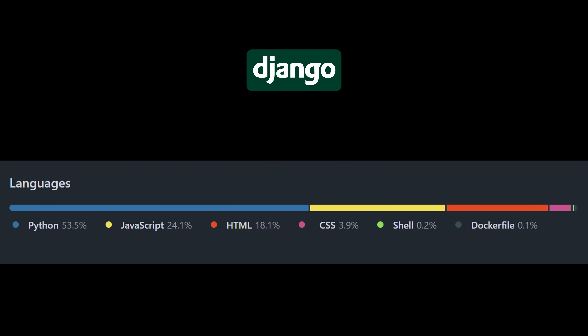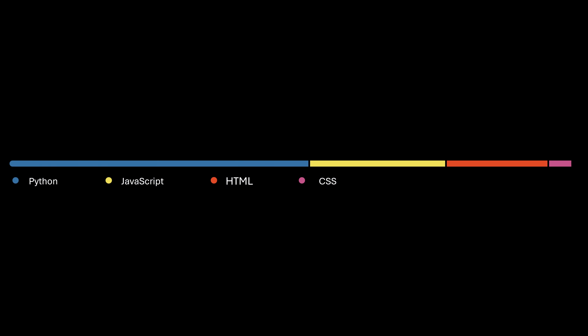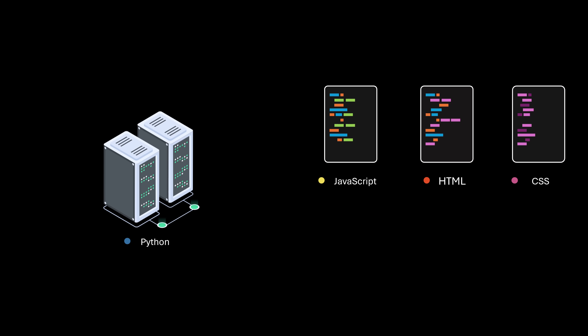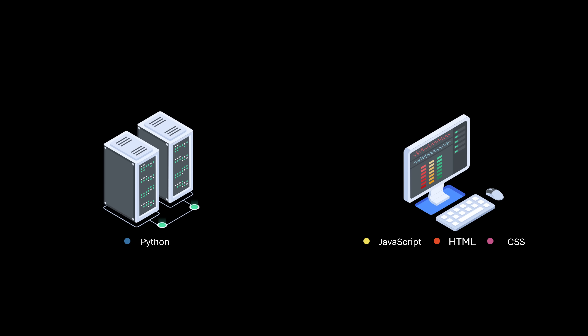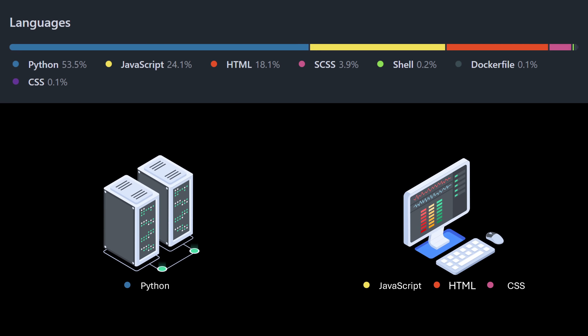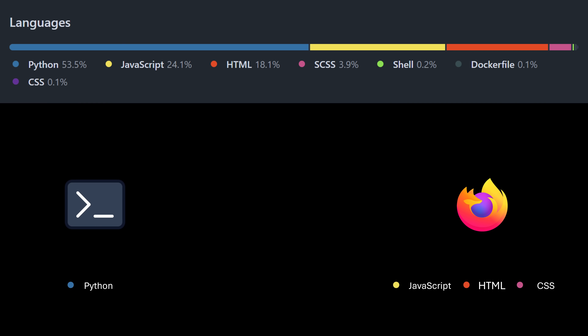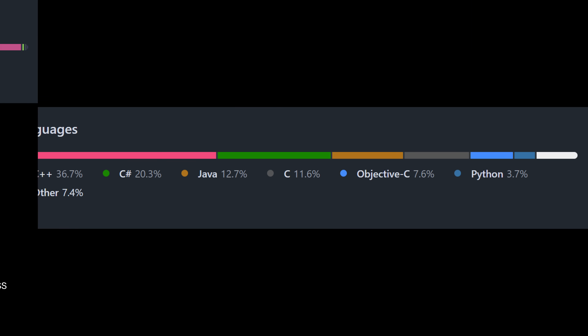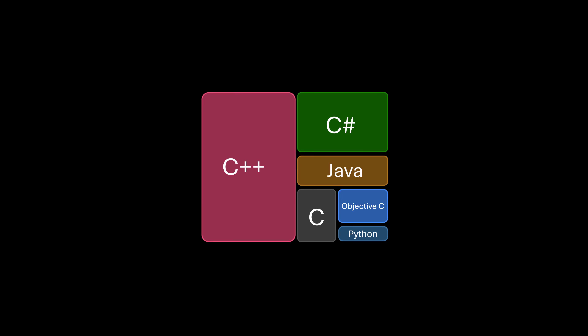Take a full-stack framework like Django, for example. It uses HTML, CSS, and JavaScript to build the user interface displayed on the client side. This is a multi-language project. But in this case, it's easy to understand how everything works in production, because we're essentially developing two separate processes that communicate remotely at runtime using some form of inter-process communication. But there are other types of projects where components written in different programming languages are meant to run together as a single process.